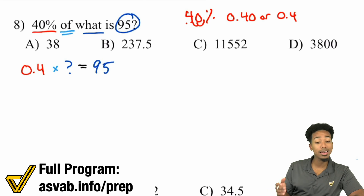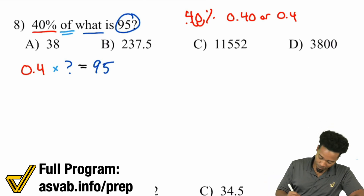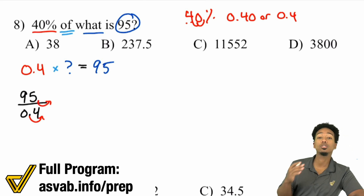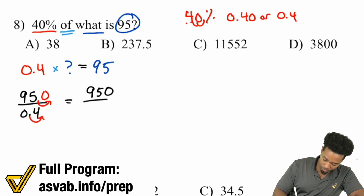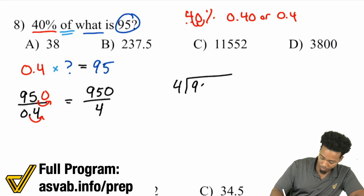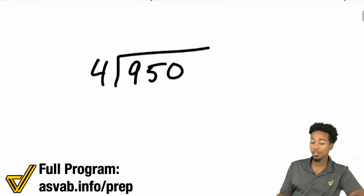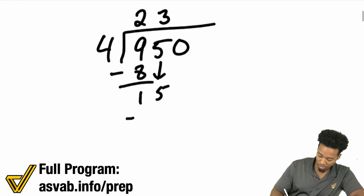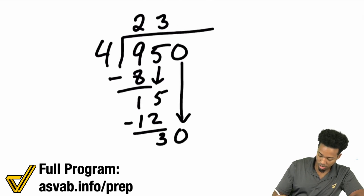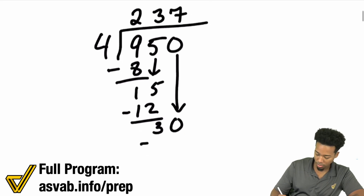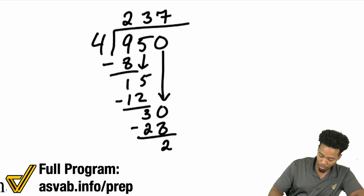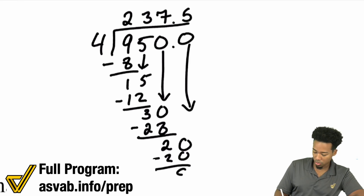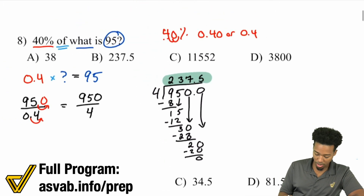What we need to do is divide the 95 by 0.4. So we have 95 divided by 0.4. Move that decimal place to the right one time on both top and bottom, so we get 950 divided by 4. 4 goes into 9 twice — wait, 4 goes into 15 three times, then 4 goes into 30 seven times, subtract 28, remainder 2. With the decimal, bring down 0 to get 20 — 4 goes into 20 five times exactly. The answer is 237.5.